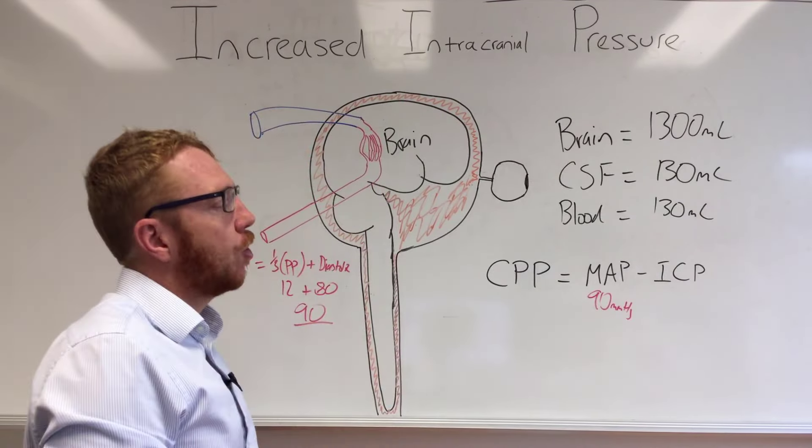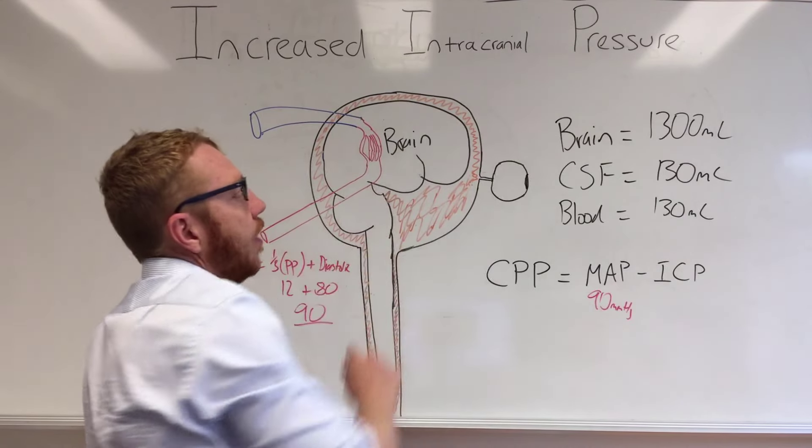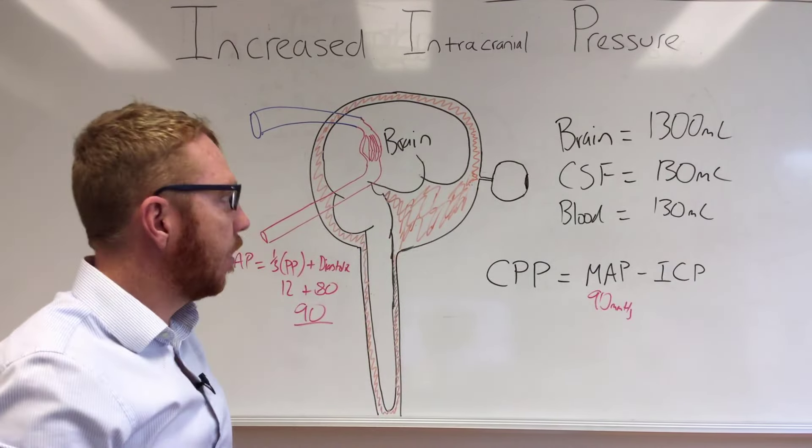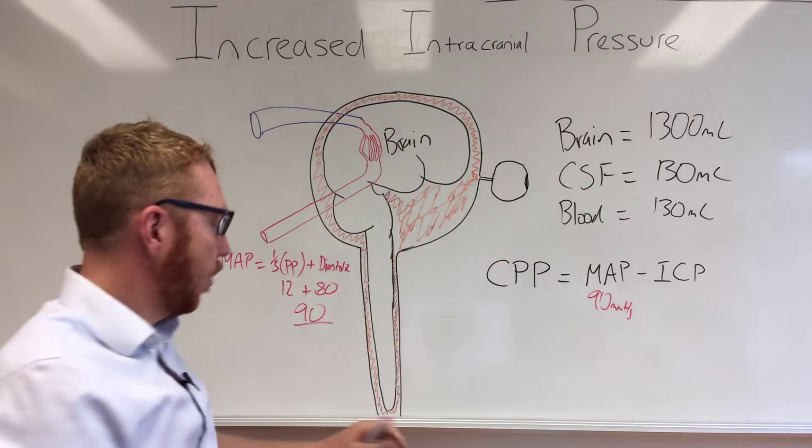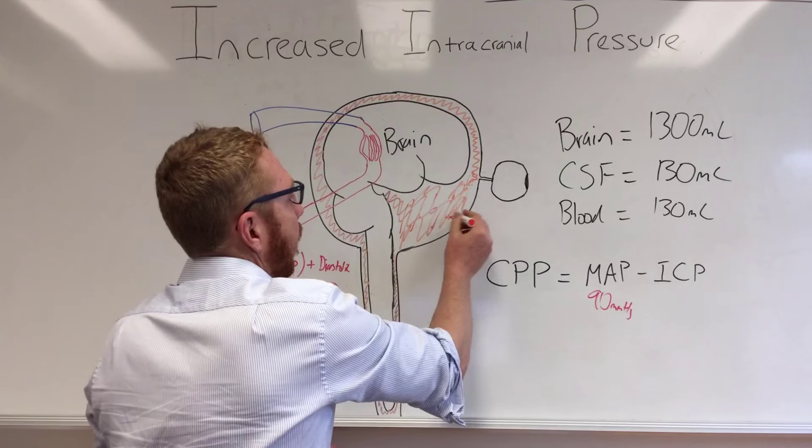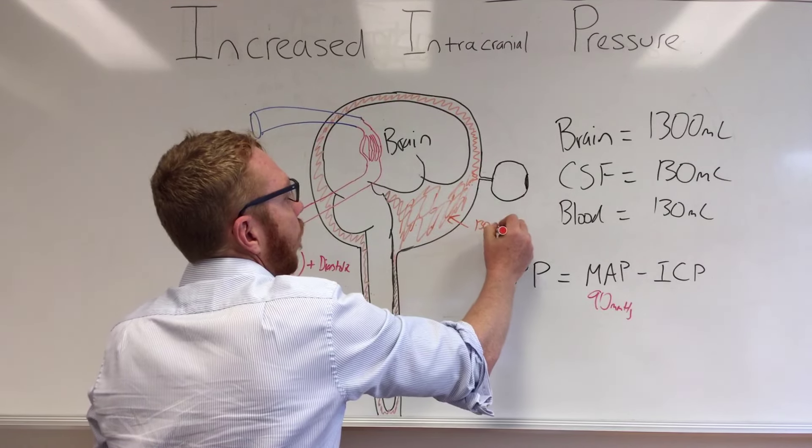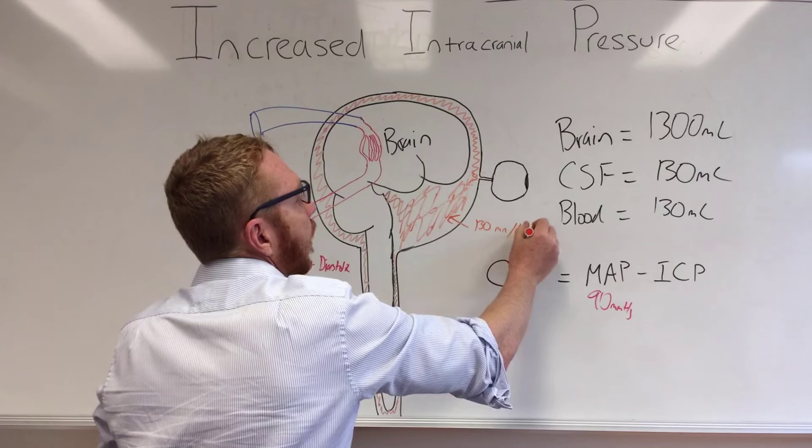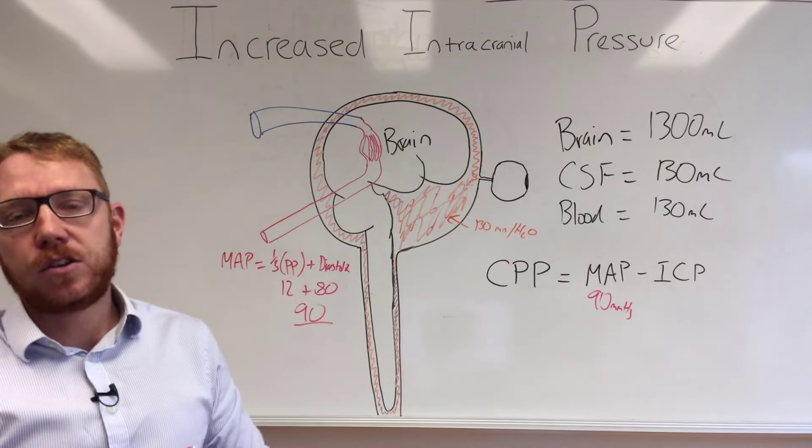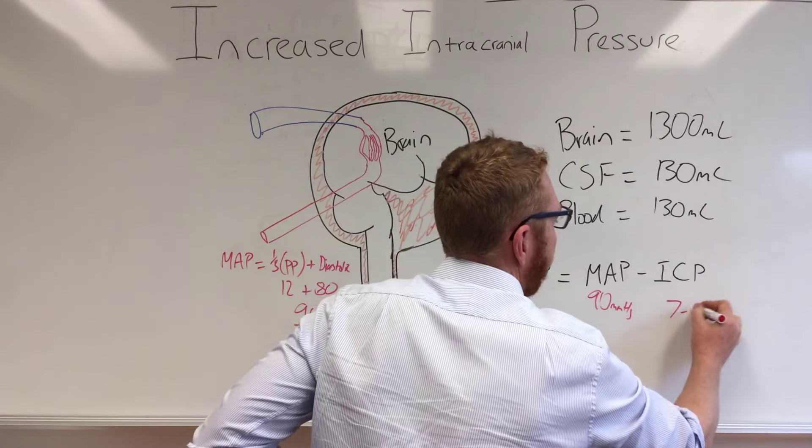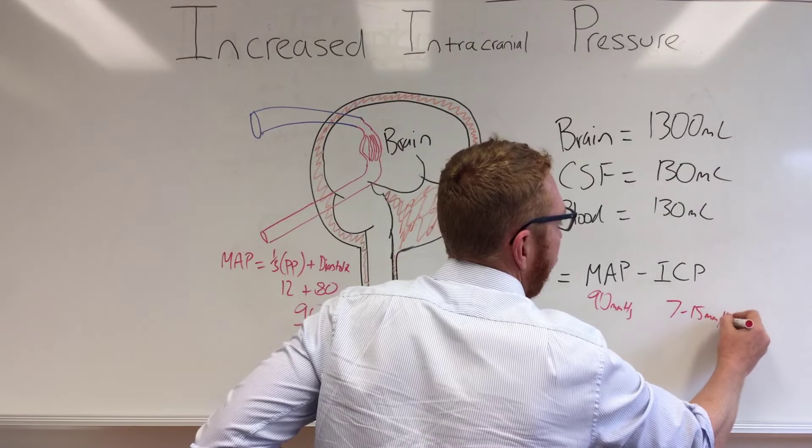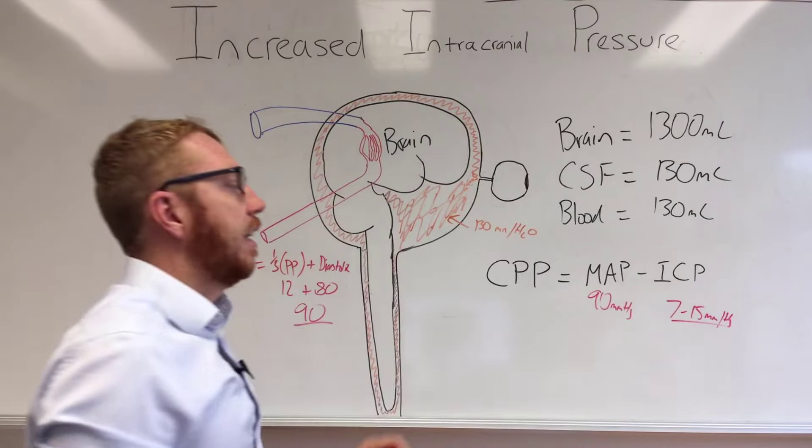In terms of intracranial pressure, this is the pressure out here in the CSF. The easy way I remember it is 130 mls. The pressure, so if you were to put a gauge into here, the pressure would be also 130 millimeters but of water. When you translate that to millimeters of mercury, it's going to be about 7 to 15 millimeters of mercury.